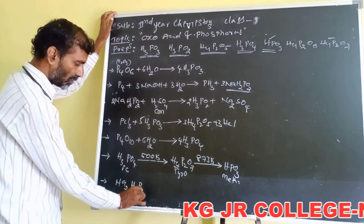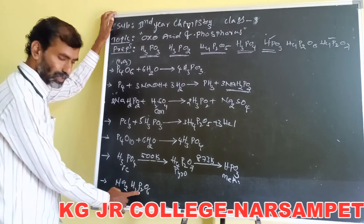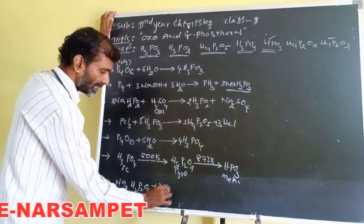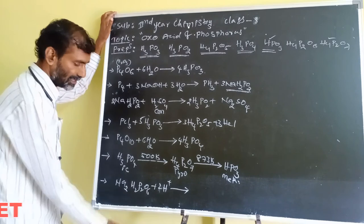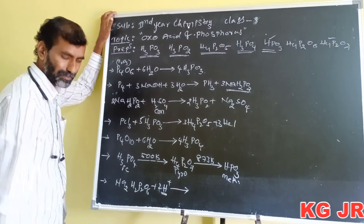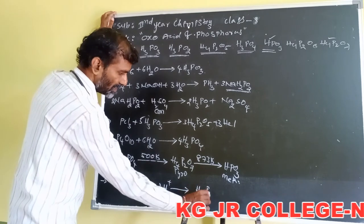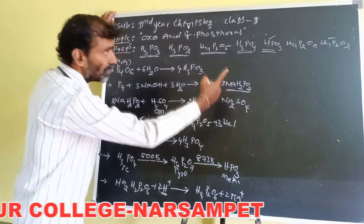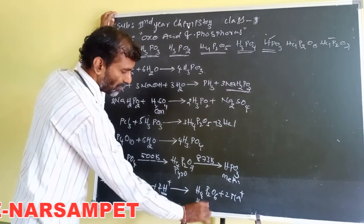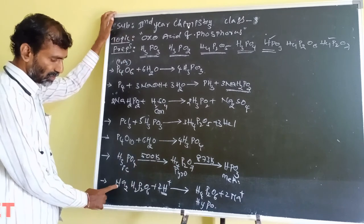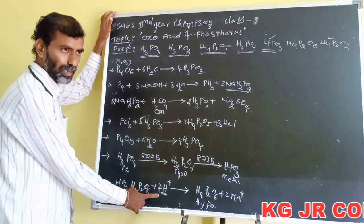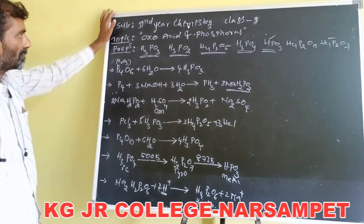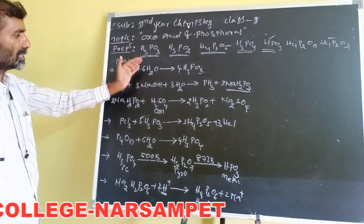Next, H4P2O6. Sodium dihydrogen hypophosphate solution is passed into a cation exchange resin which consists of H+ ions, and we get H4P2O6. So when sodium hypophosphate is passed through cation exchange resin, we get H4P2O6, that is hypophosphoric acid. This is about the preparation of phosphoric and phosphorous acids.